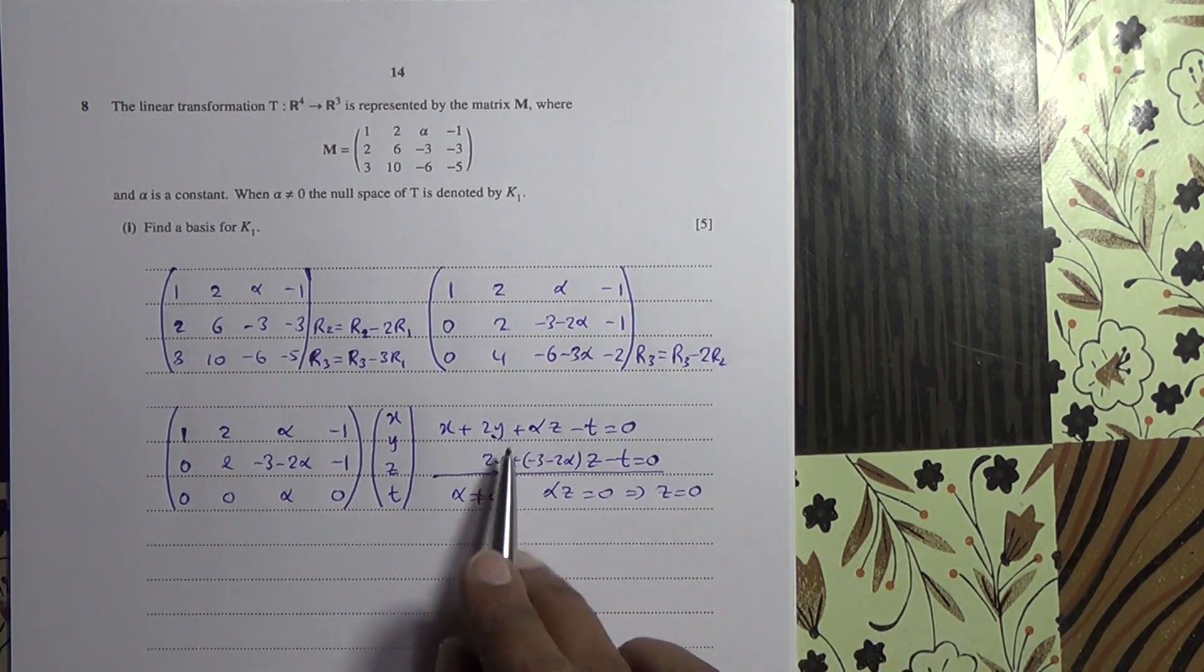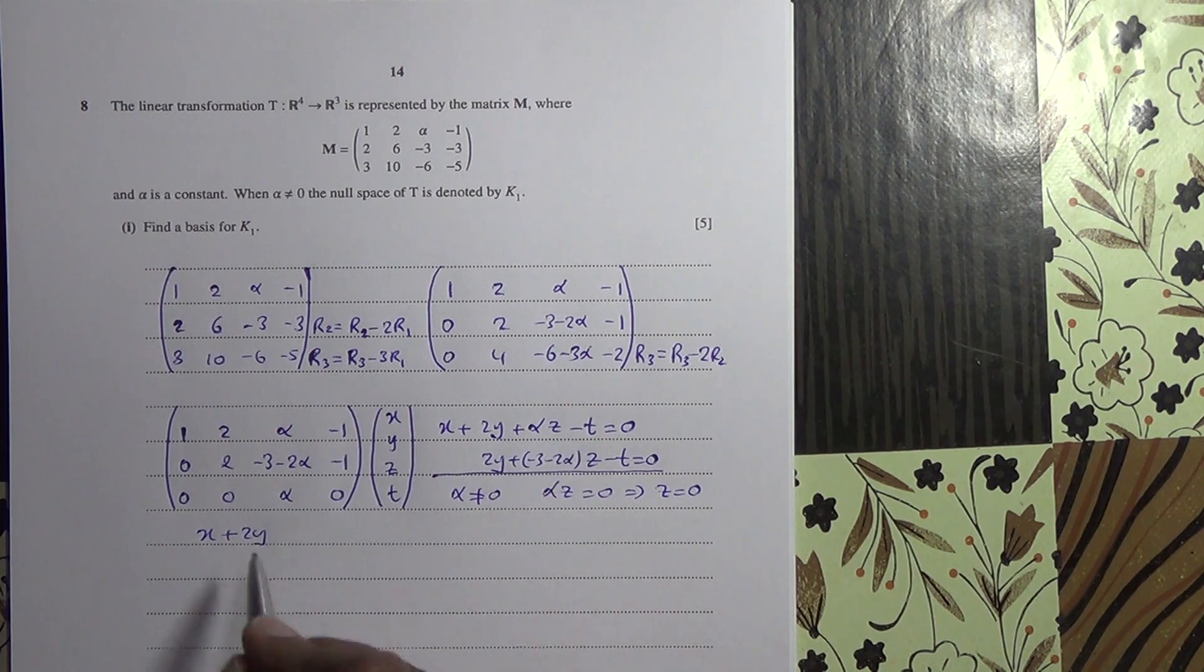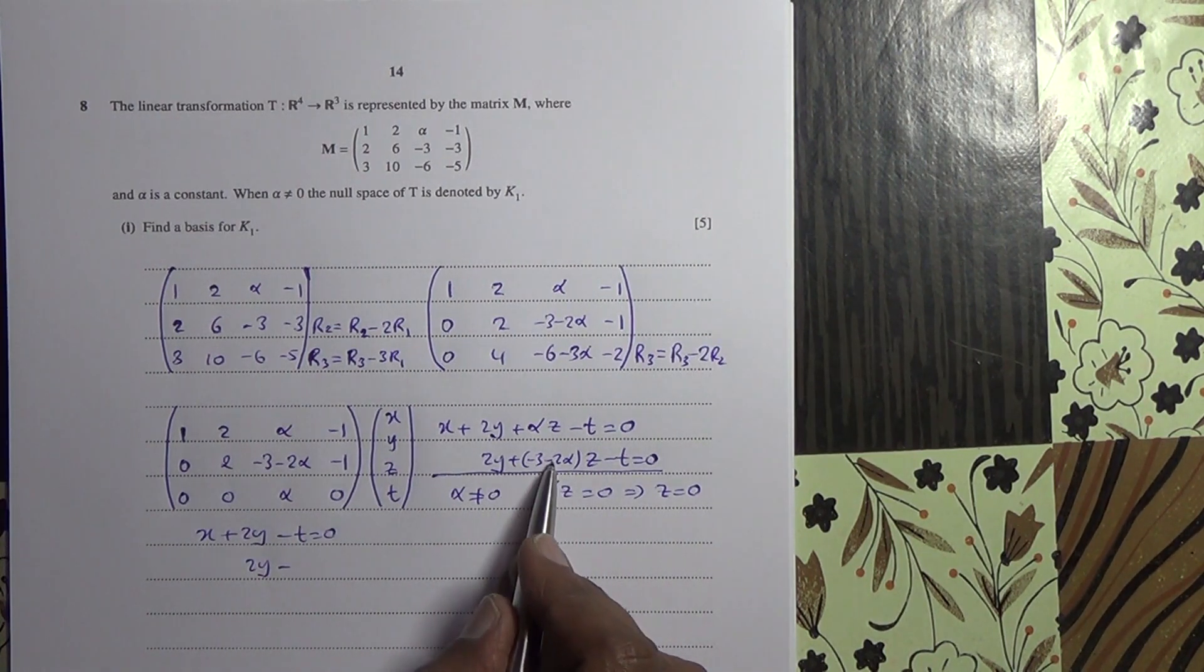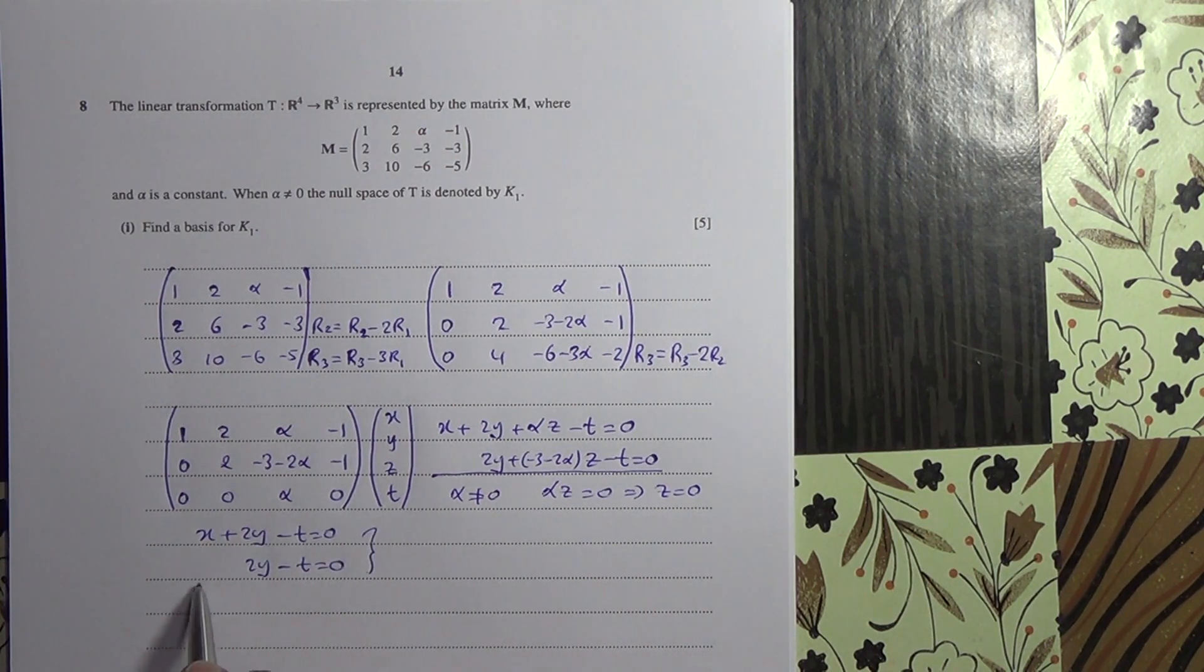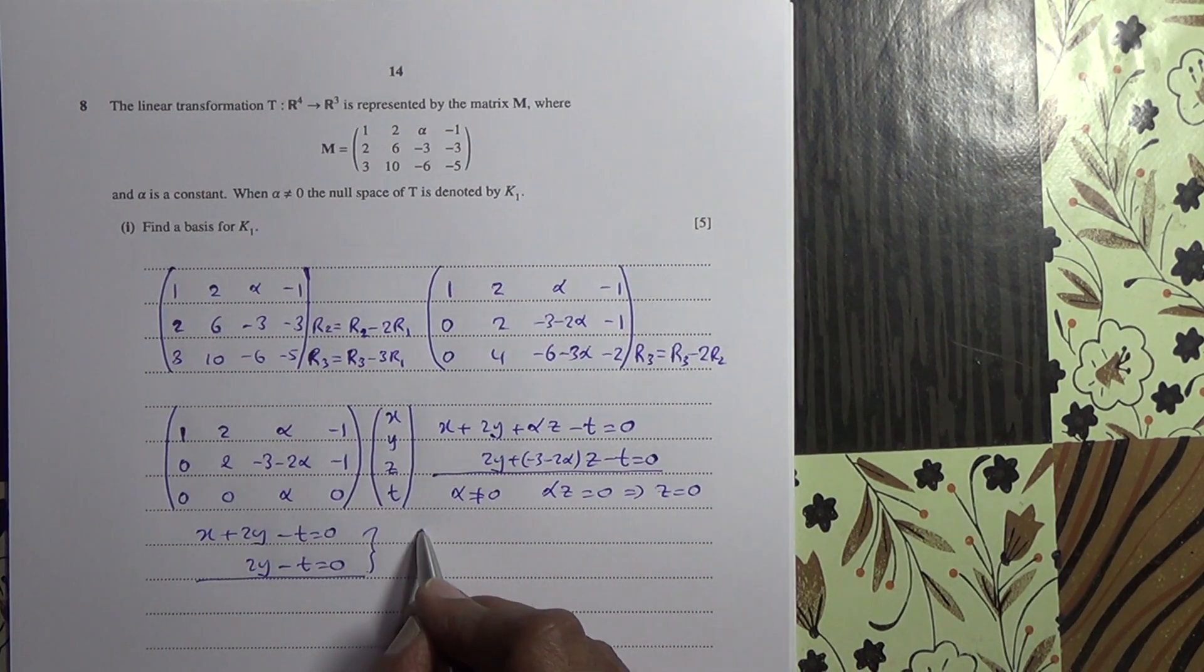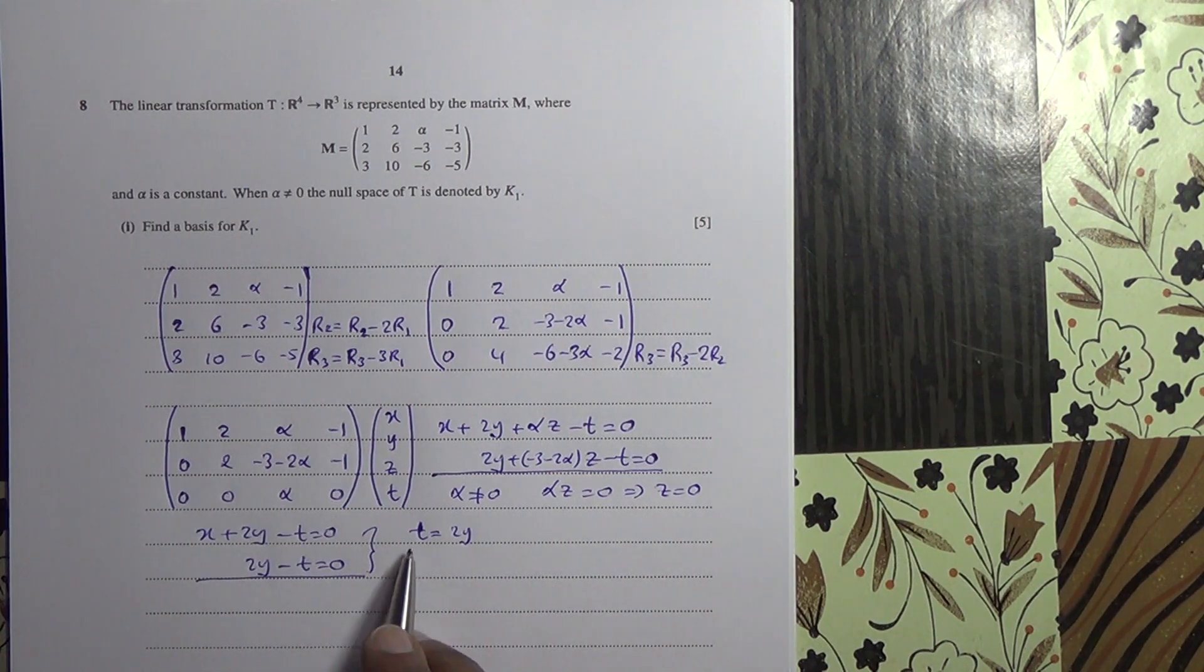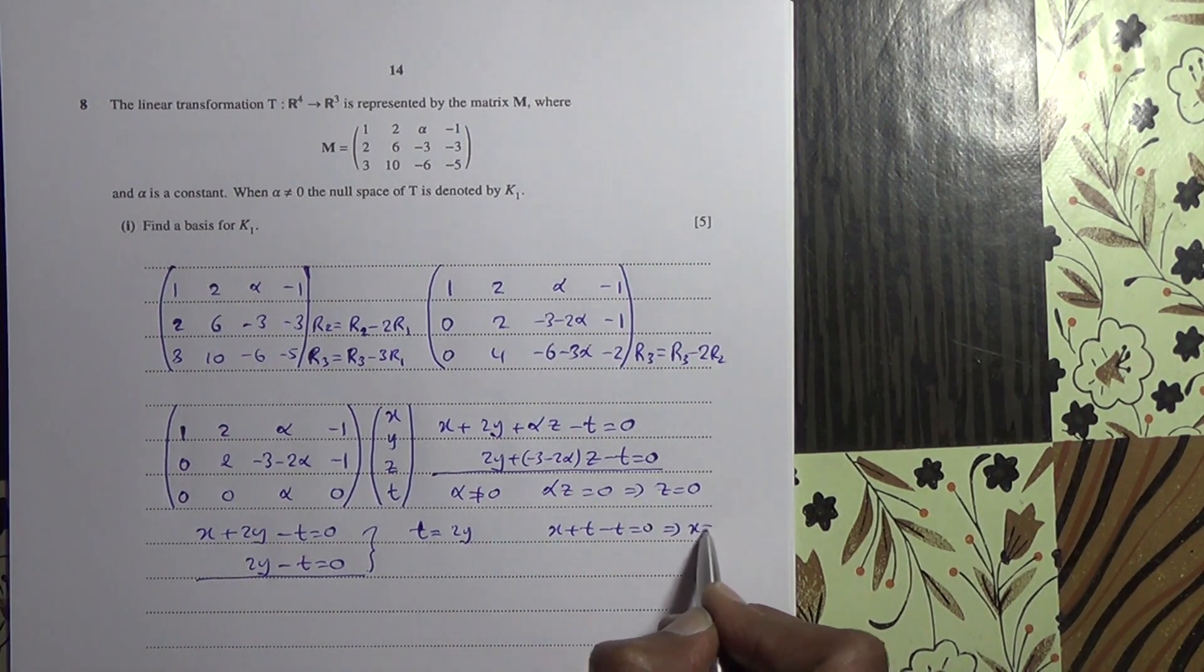Substituting Z for 0 in this equation here, 0 times Z is 0, minus T is equal to 0. And I've got 2Y plus 0 here, because 0 times the whole thing here becomes 0, minus T is equal to 0. And if we solve this equation, we should be able to get T is equal to 2Y. So T is equal to 2Y. And then if you replace 2Y by T here, X minus T minus T, I mean X plus T, so X plus T minus T is equal to 0, meaning that X is going to be equal to 0.